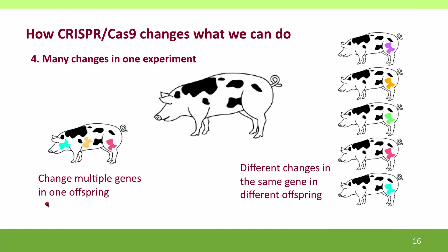CRISPR-Cas9 is also able to make more than one change in a single experiment. By using multiple guide RNAs and correction DNAs provided to a single cell, it's possible to change multiple genes in one offspring. By providing multiple correction DNAs but the same guide RNA, it's possible to make many different changes in the same gene.